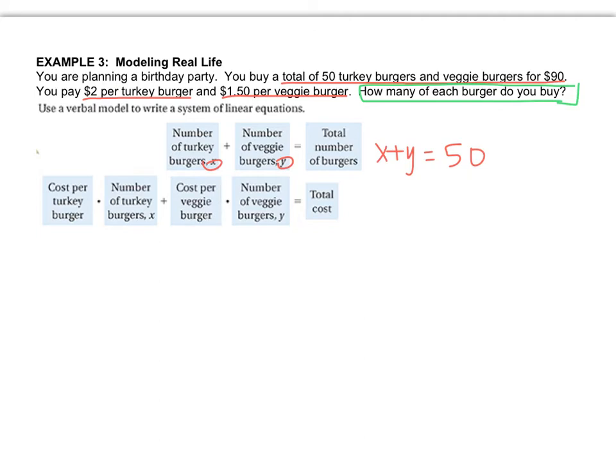Then they tell me that the cost per turkey burger, which I know is 2, times x, plus the cost per veggie burger, which I know is 1.50, times y, that is equal to 90, because that's the total cost. So I'm just going to write it a little simpler: 2x plus 1.5y equals 90.